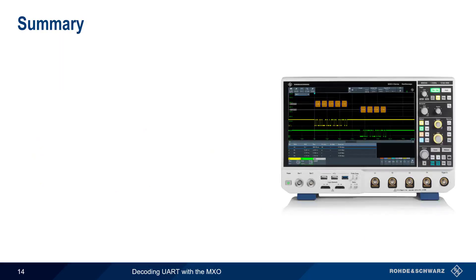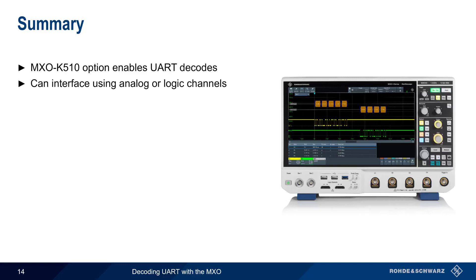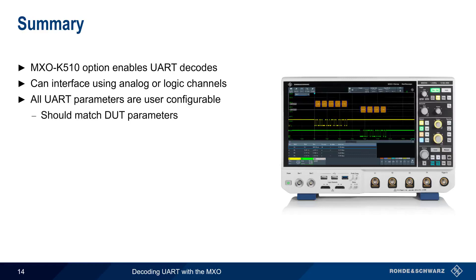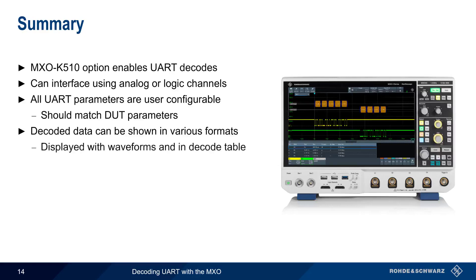Let's end with a brief summary. The K510 serial decode option enables UART decodes on MXO Series Oscilloscopes. Connections to the DUT wires can be made using either the scope's analog channels or logic channels. All UART protocol parameters are user configurable and should match the DUT parameters. Decoded serial data can be displayed in a variety of formats such as hex, binary, ASCII, etc., and this data is displayed both with the waveforms and in a decode table.